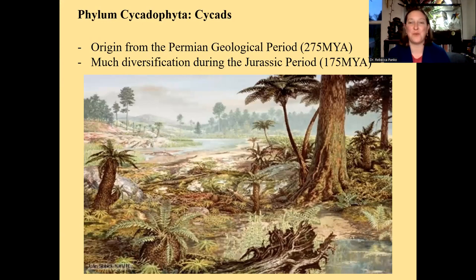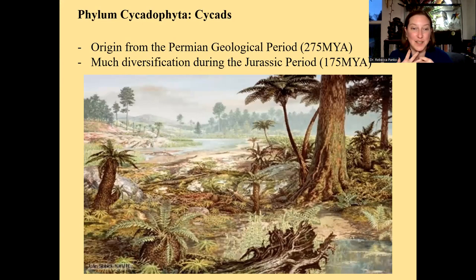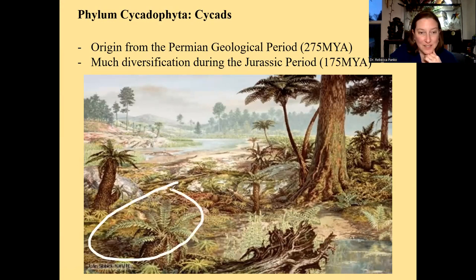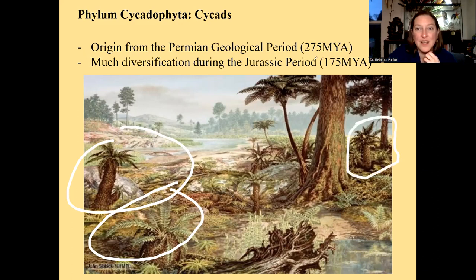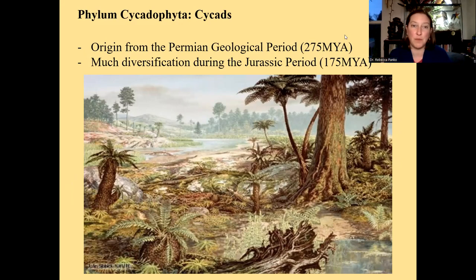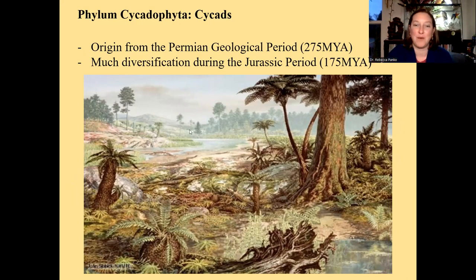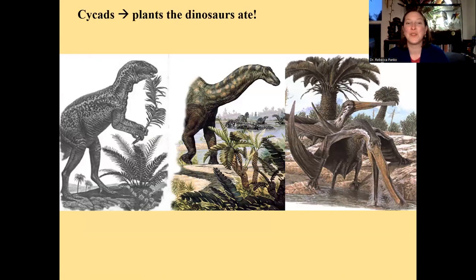This is an old drawing from around 275 million years ago — the Permian geological period. That's when cycads first showed up. You can see several cycads in this drawing here. They appeared around 275 million years ago in the Permian, but they experienced a lot of diversification during the Jurassic period. When you hear 'Jurassic,' you probably think dinosaurs — and you'd be right. Cycads are plants that dinosaurs ate.